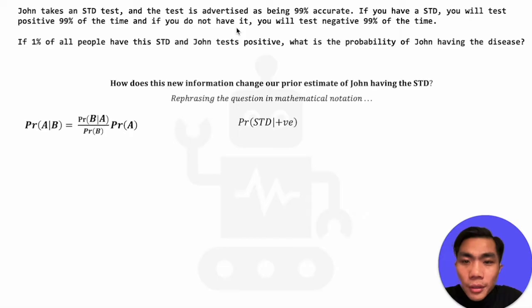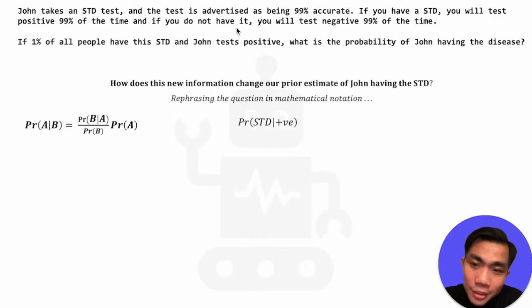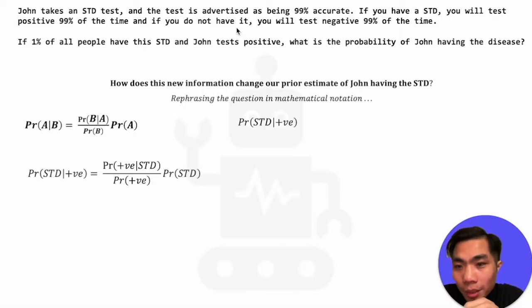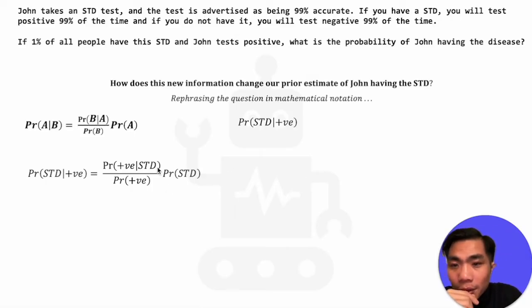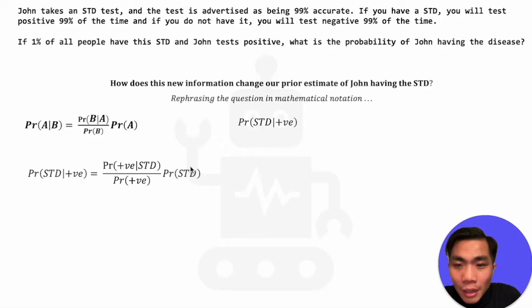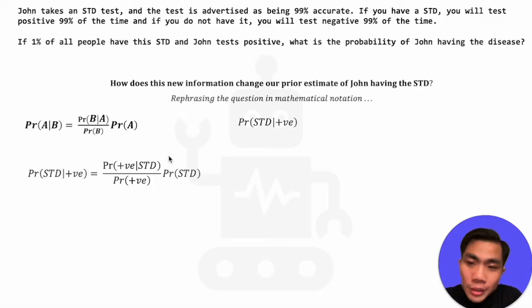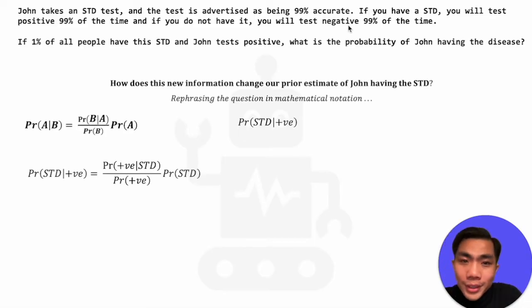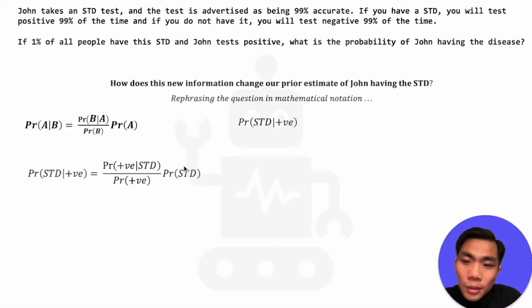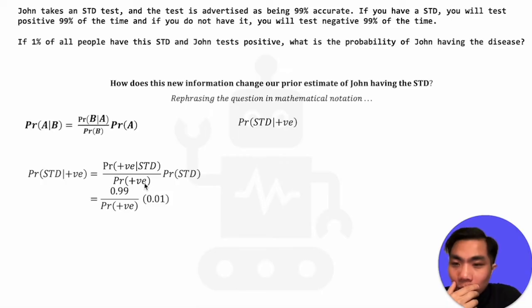We're trying to find the probability of having the STD given that we tested positive. Using Bayes' theorem, we expand the terms. We have the prior — the probability of having the STD, which is 1% — scaled by a fraction. The numerator of that fraction is the probability of testing positive given that we have the STD, which is 99%, as described in the problem. What's missing is the denominator: the probability of testing positive.